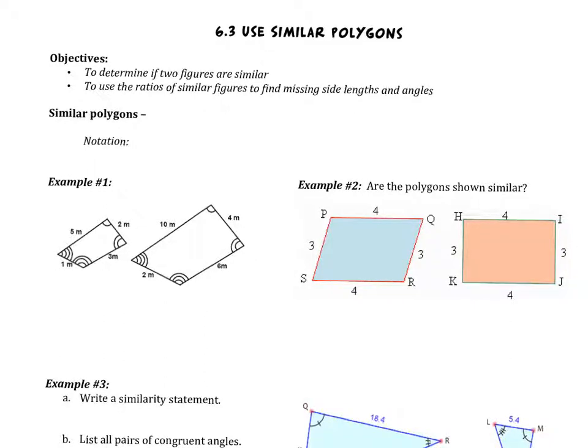Today's video covers section 6.3, which is Use Similar Polygons. We have two objectives listed at the top. The first one is to determine if two figures are similar. Then, once we know that two figures are similar, we are going to use the ratios of these similar figures to find missing side lengths and missing angles.